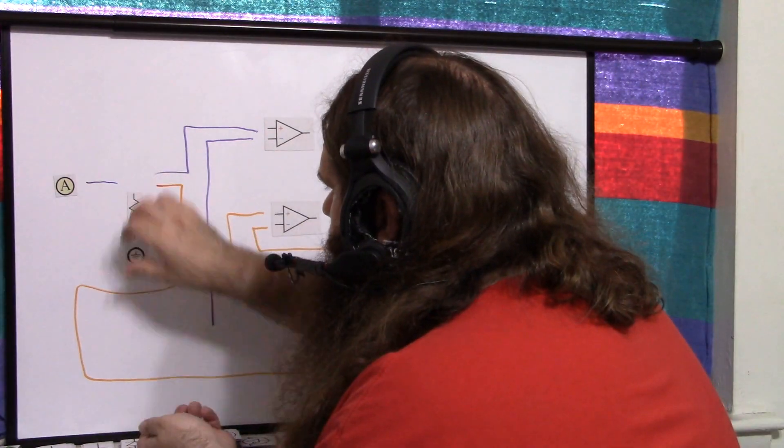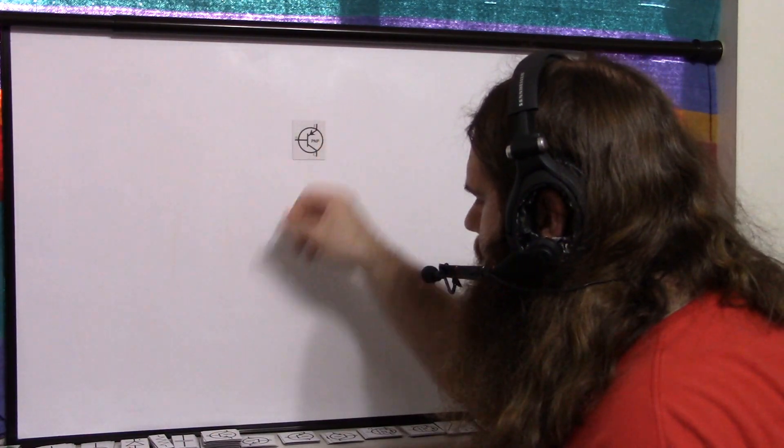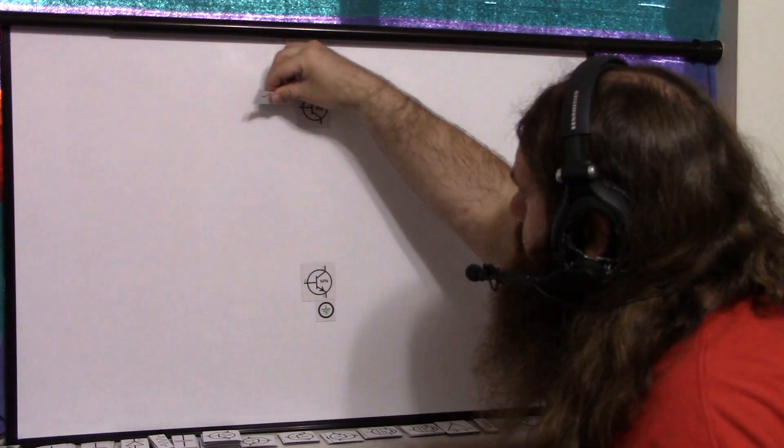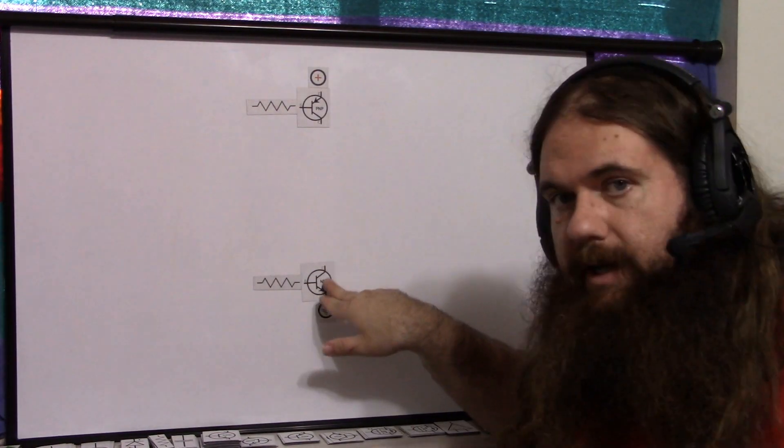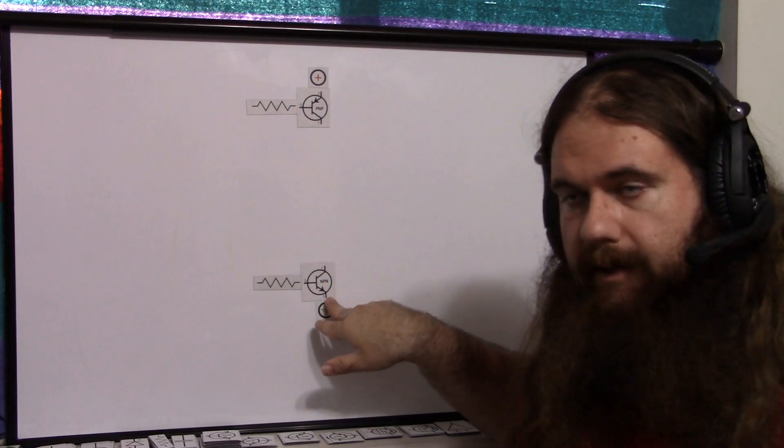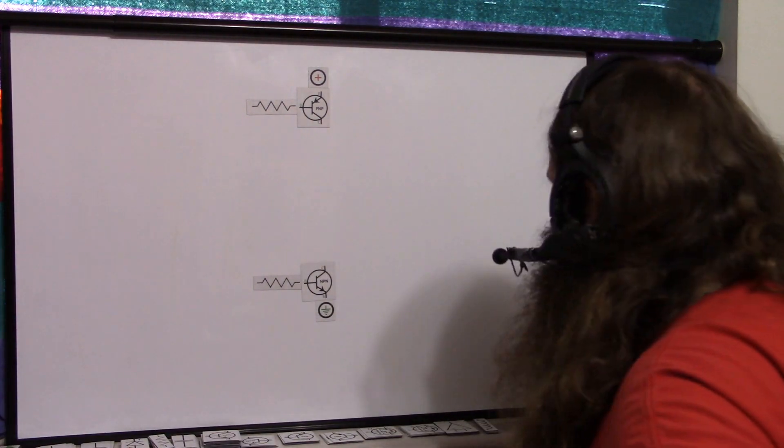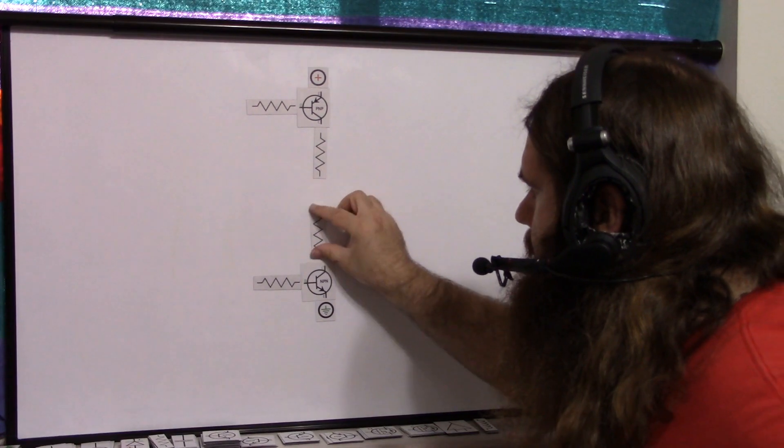Let's have a PNP transistor and an NPN transistor. Standard configurations, base resistors. But if this NPN opens up, then it has a low impedance path to ground. If this PNP opens up, it has a low impedance path to high. So that sounds like a pull up and pull down resistor to me, doesn't it?